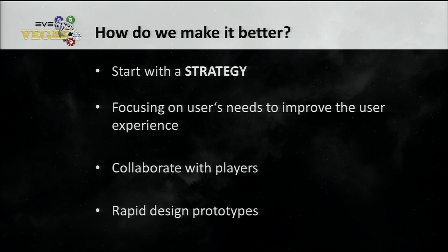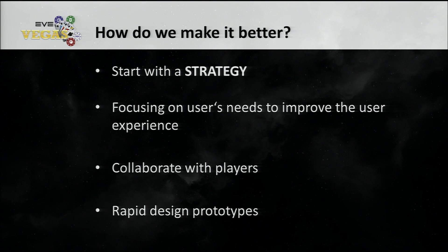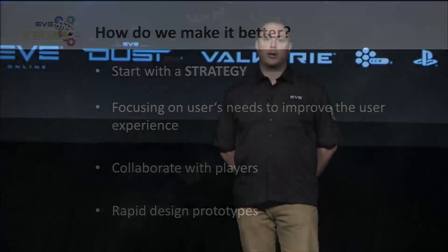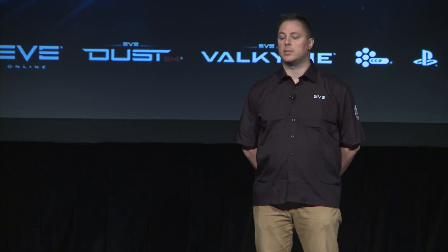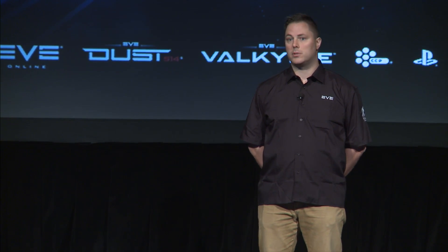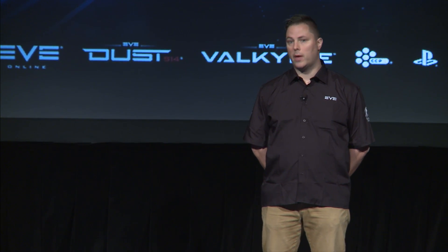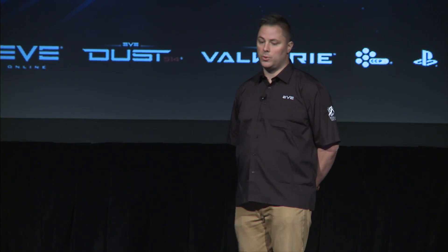So how do we make this possible? We need to start with a strategy — the strategy is the foundation, the building block before you start building the house itself. Then we need to focus on the user's needs: through research and evaluations, we realize what users need to make the experience good, so we collaborate with the players because they are the ones using the UI. And once we've gotten insight into what is needed, we do rapid design prototypes, because prototypes are quick and easy, and we can do a lot of them and see what works before investing more time in development.